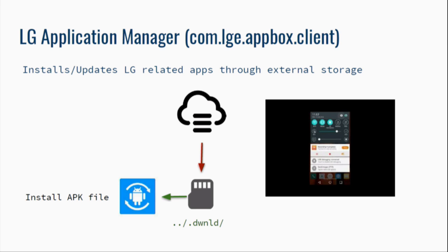The next excerpt is: 'You should not store executable files on external storage.' LG has its own app store for applications associated with LG devices, and LG Application Manager is actually the LG App Box client — a system app with high privilege. It is responsible for updating, downloading, and installing such updates on all LG phones. The app downloads the Android package update file through external storage and installs from external storage. This means a Man-in-the-Disk attacker can override such updates and install any app they want on all LG phones at any time. Quite simple.